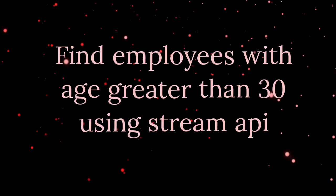The next question was also on Stream API: find employees with age greater than 30 using Stream API. You can use stream().filter() and call getAge() from your POJO class with the condition e.getAge() > 30, then collect into a list. That was a simple question based on Stream API.